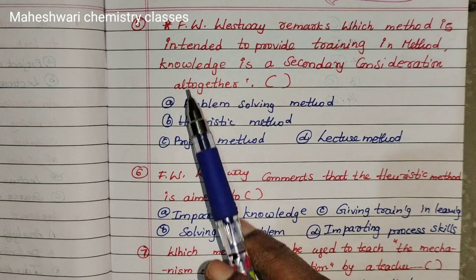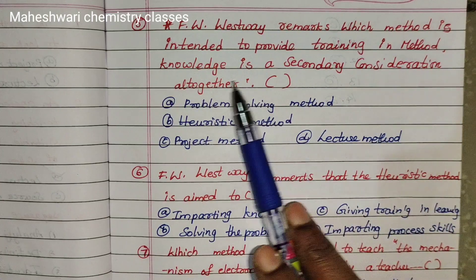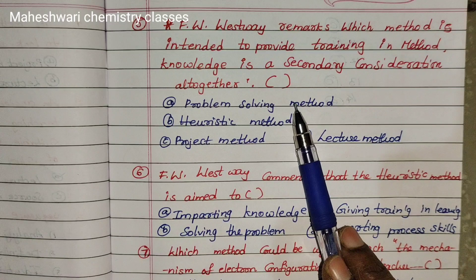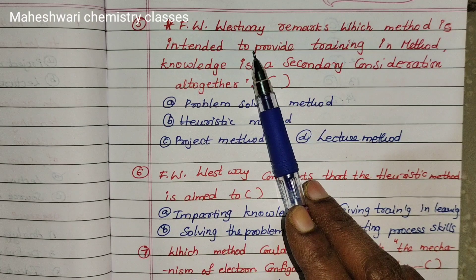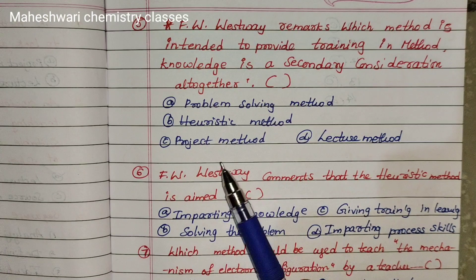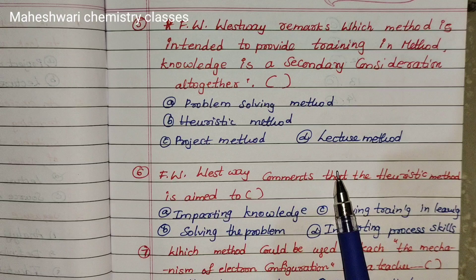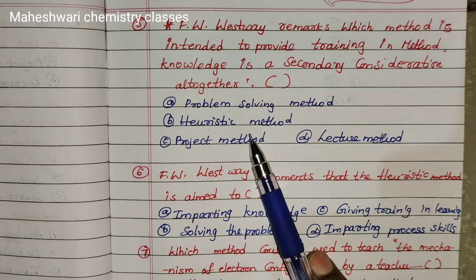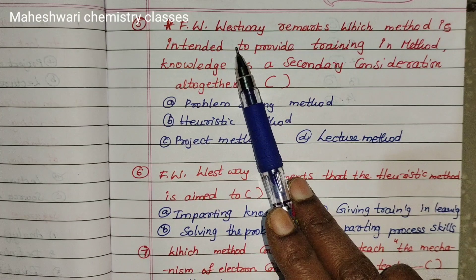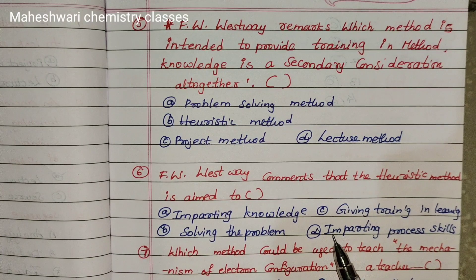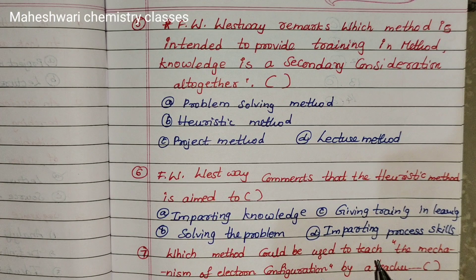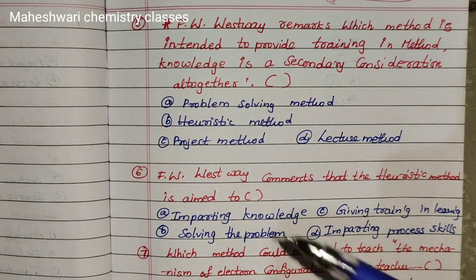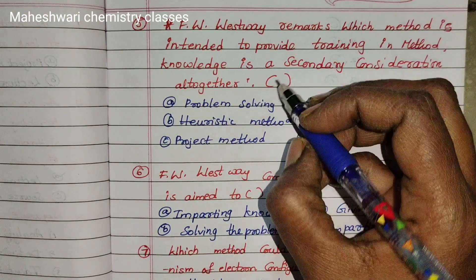Fifth question: F.W. Westaway remarks — which method is intended to prove training in method, where knowledge is a secondary consideration altogether? Options are Problem-solving method, Heuristic method, Project method, Lecture method. The answer is Heuristic method, option A.